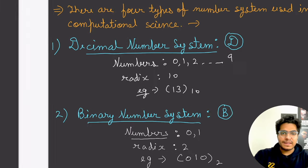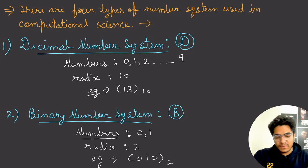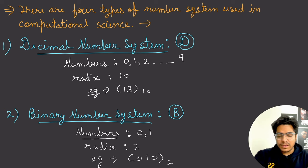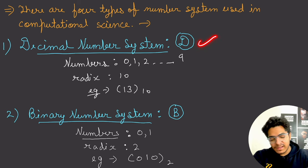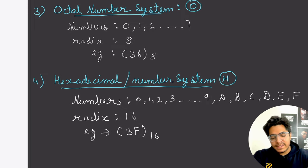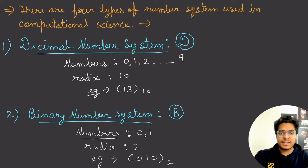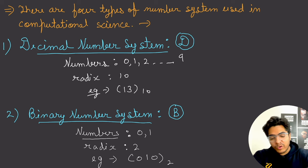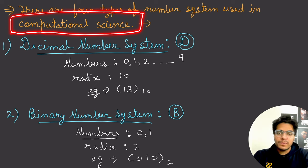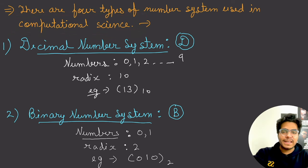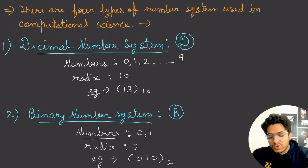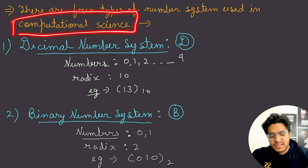There are four types of number systems used in computational science: decimal, binary, octal, and hexadecimal. These are the main ones we use.